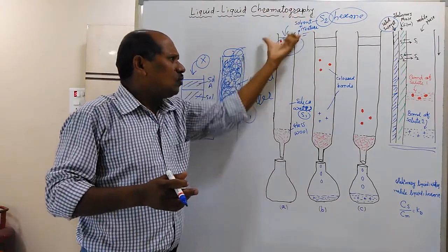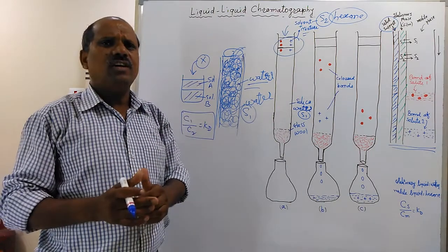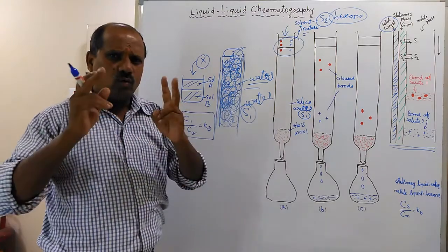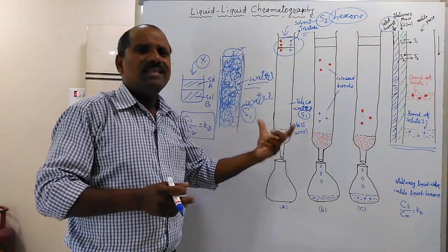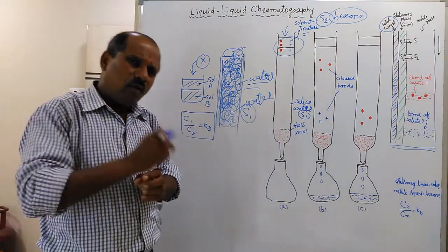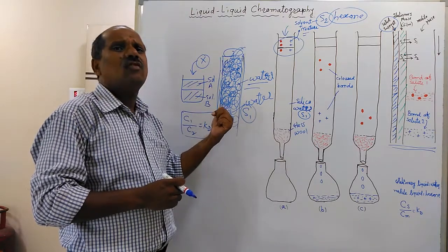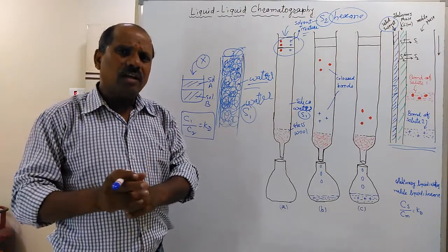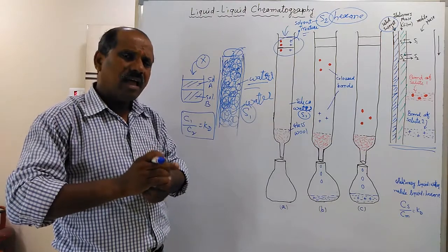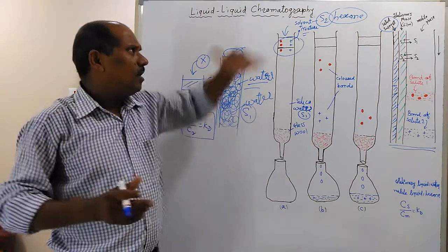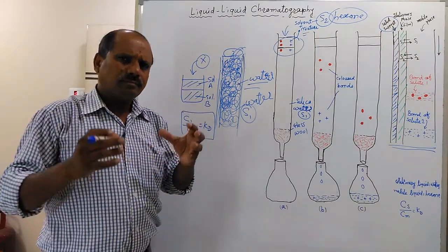When the solvent and mixture start to flow towards the bottom, the principle of distribution law is applied. We are using two solvents: solvent two with the mixture, which is flowing from top to bottom, is called the mobile phase; and solvent one, which is soaked with the silica material inside the tube, is called the stationary phase. These two solvents — solvent one and solvent two — are immiscible with each other.